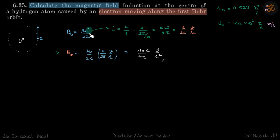I in our case, as we have seen in previous problem also, is charge divided by time period. The charge is e and time period is 2 pi by omega, and omega we can write as v by r.